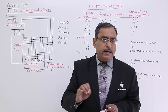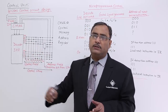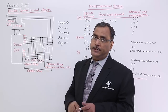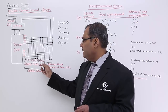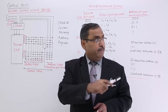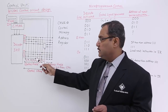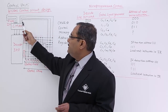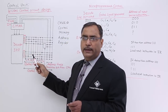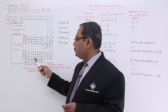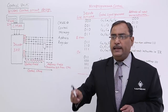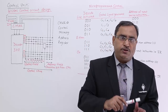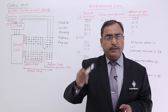Depending upon the instruction's bit combination, one of the output lines will get enabled by the decoder circuit. Depending upon the enabled output line, the corresponding control signal will get generated. I have written 8 control signals C0 to C7, and the respective control signals will get generated. The control signals will get generated, and this is known as the return address. This return address will be coming to the CMAR, and that address will be decoded. Another horizontal line will get selected and respective control signals will get generated, and this process will continue until it reaches the last line — 111 — which indicates to load the next instruction from the Instruction Register to the CMAR.